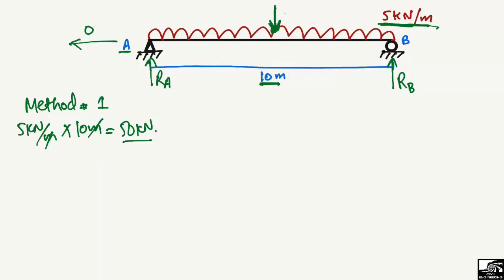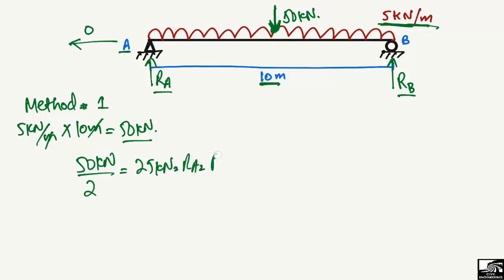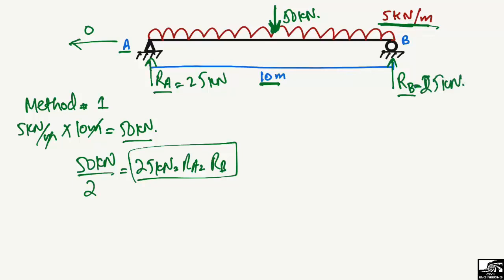This 50 kN total load acts at the center of the beam. Since we have two supports, RA and RB, we simply divide 50 kN by 2, giving us 25 kN. So RA equals 25 kN and RB equals 25 kN. This is the first, very simple method to find the support reactions.